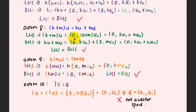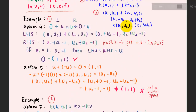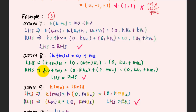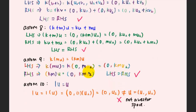For the scalar multiplication the first entry must be zero according to the multiplication rule in this space. The second entry is the normal multiplication, so we get 0 and ku2 plus mu2. On the right-hand side, ku plus mu involves scalar multiplication, so the first entry must be zero and we get ku2 plus mu2. Checking left-hand side equals right-hand side, we say that axiom number 8 is valid and fulfilled.